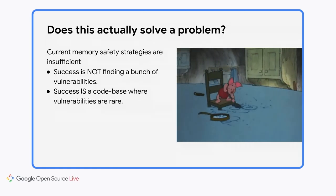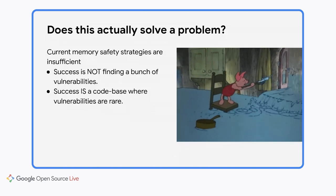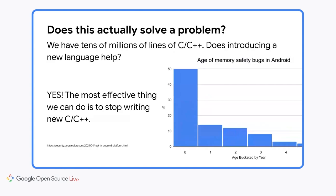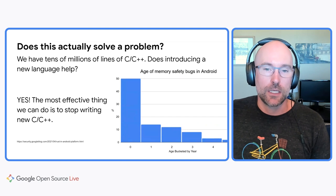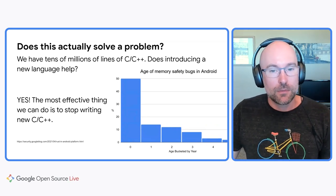A critical difference between today and 10 years ago is that today we have a memory safe language that can be used in all the same places where we currently use C and C++. But then we have tens of millions of lines of C and C++ code. So does switching to a new language actually help? To answer that question, we did an evaluation of all the memory safety bugs reported to Android in 2021. We see that they're unevenly distributed across our codebase, with new or recently modified code having a much higher frequency of vulnerabilities.